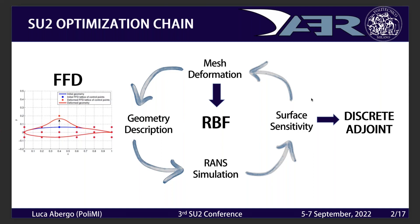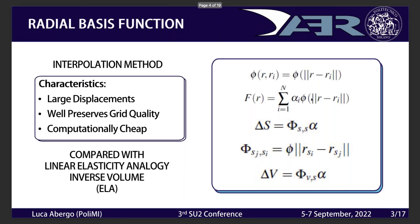Now we know which part of the body has to be deformed to improve performance, and we need a mesh deformation technique. The one we developed at Politecnico and added to the optimization loop is called RBF — radial basis functions — which is an interpolation technique. It can handle larger displacements, very well preserves the quality of the mesh, and is computationally cheap compared to the previous method in SU2, which is a linear elasticity analogy treating the mesh as a solid continuum.